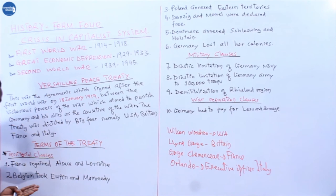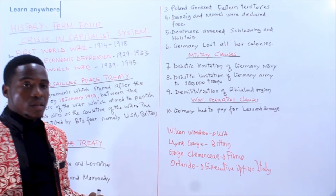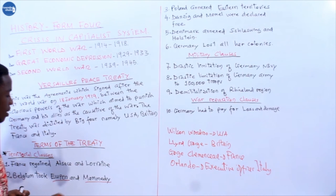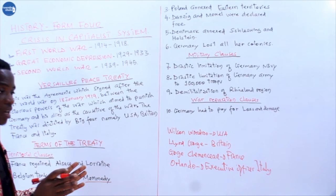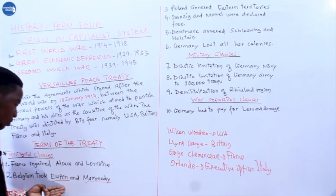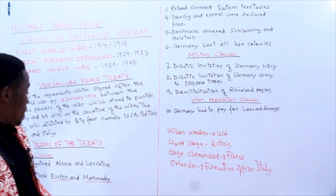Another territorial clause was about territory given to Belgium. Belgium took Eupen and Malmedy, which were part of Germany. Belgium also fought on the side of the Triple Entente, so as reward they were given Eupen and Malmedy, which were part of Germany. When you see the European map, you can see that at the western part of Germany is where Eupen and Malmedy are located, near Belgium.